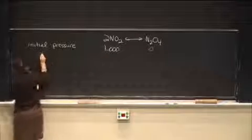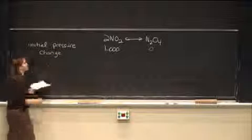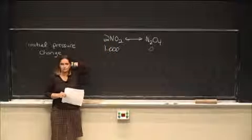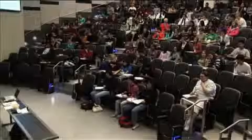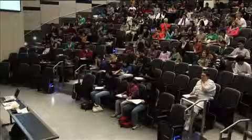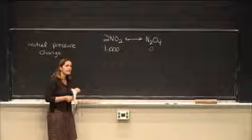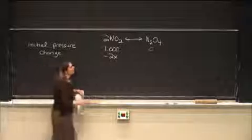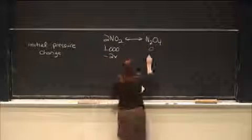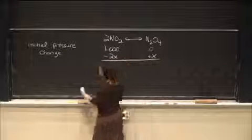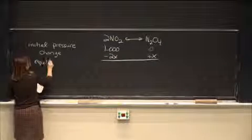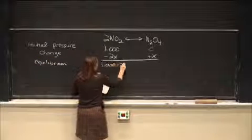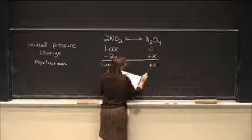Now we talk about the change as we go toward equilibrium. How much does the reactant change? What do I write here? Minus 2x. So again, we're considering the stoichiometry, and what's over here? Just plus x, and then at equilibrium we now have 1 minus 2x and x.